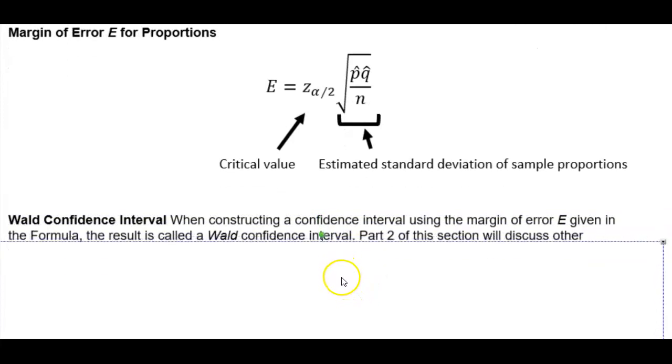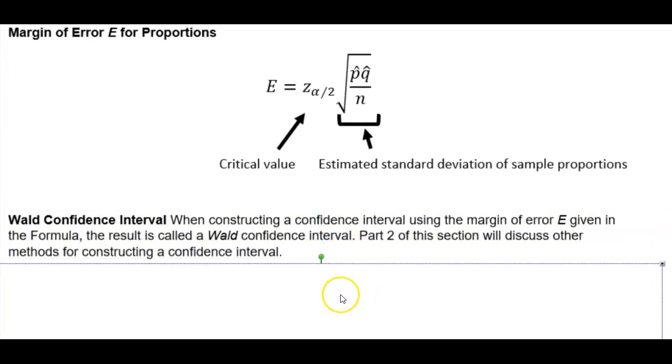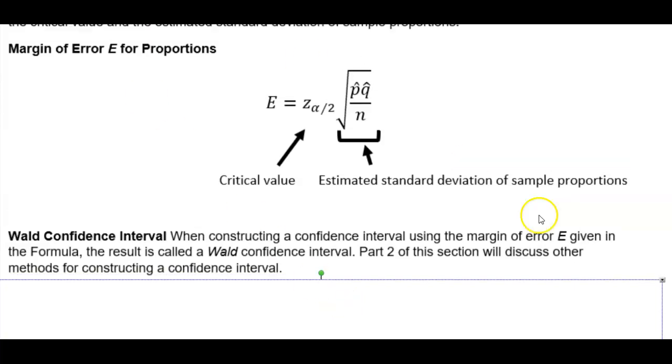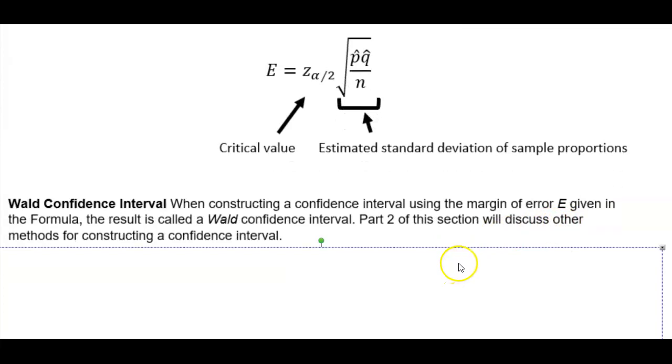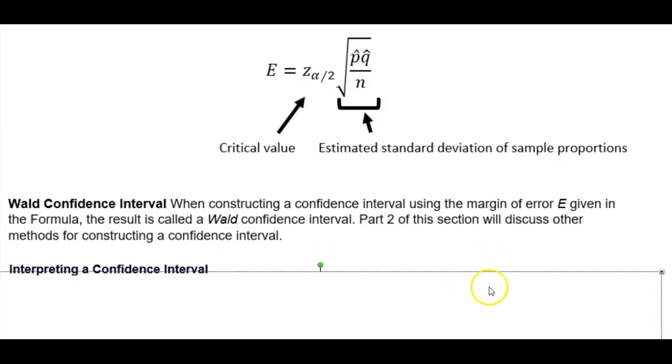Now we also have what we call the Wald confidence interval. When constructing a confidence interval using the margin of error E given in the formula, the result is called a Wald confidence interval. In part 2 of this section, other methods for constructing the confidence interval will be discussed.